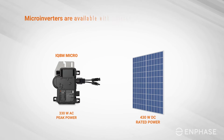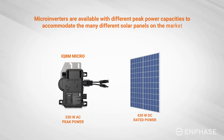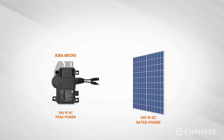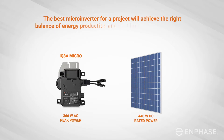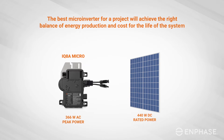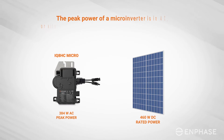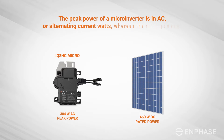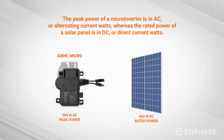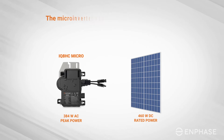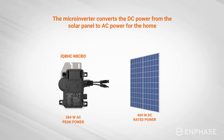Microinverters are available with different peak power capacities to accommodate the many different solar panels on the market. The best microinverter for a project will achieve the right balance of energy production and cost for the life of the system. The peak power of a microinverter is in AC, or alternating current watts, whereas the rated power of a solar panel is in DC, or direct current watts. The microinverter converts the DC power from the solar panel to AC power for the home.